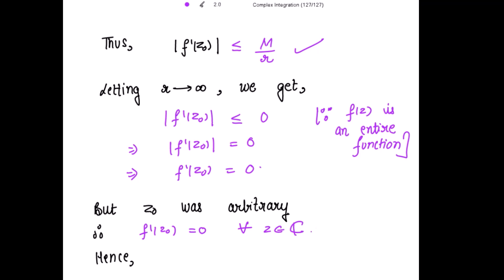And when the derivative becomes 0? When the function is constant. Hence f(z) is constant for all z belonging to the set of complex numbers. Thank you, stay blessed.